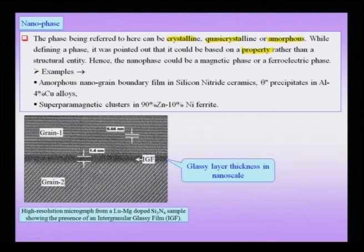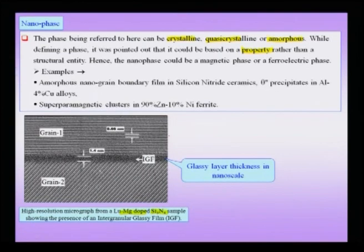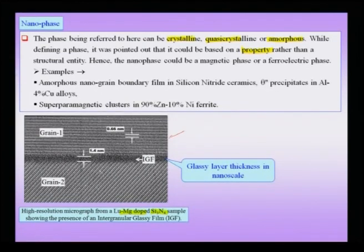One example of such a nano phase material is shown here — a very interesting example of a sample of silicon nitride, which is actually a lutetium magnesium doped silicon nitride ceramic. In this ceramic, there are two parts which have lattice fringes — what you might call crystalline grains.